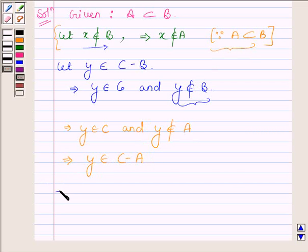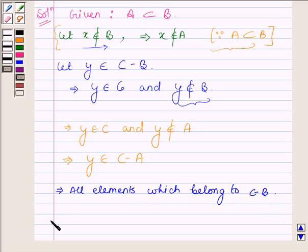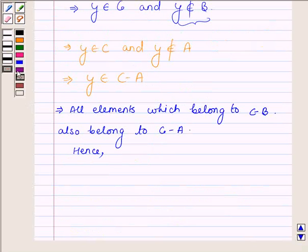So this implies all elements which belong to C minus B also belong to set C minus A. And hence the set C minus B is contained in the set C minus A, where A is a subset of set B.